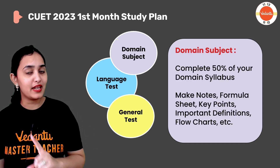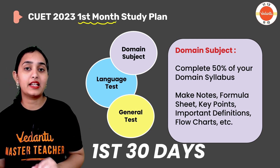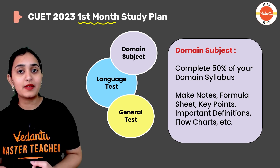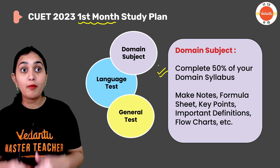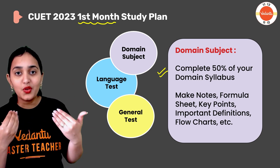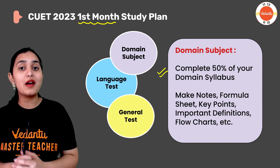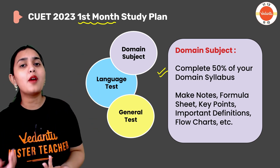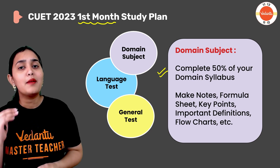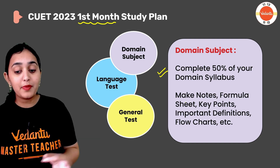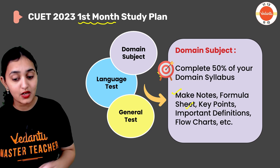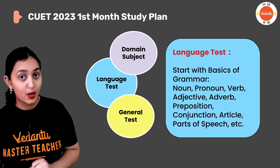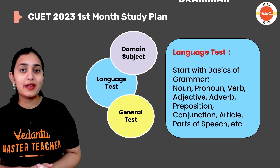Step by step: in the first 30 days, your target is to complete 50% of your Domain Subject — Maths, Physics, Chemistry, Biology, whatever you've chosen. Since you've already given your Class 12 board exam, this is complete revision with objective-type question practice. There are lots of questions from the 12th board syllabus since it's objective type — no long answers, just one-mark and medium questions. Complete your syllabus notes, key points, important definitions, and flowcharts. Cover at least 50% of the syllabus. For the language test — English, Hindi, Sanskrit — it's basically grammar questions, not literature.